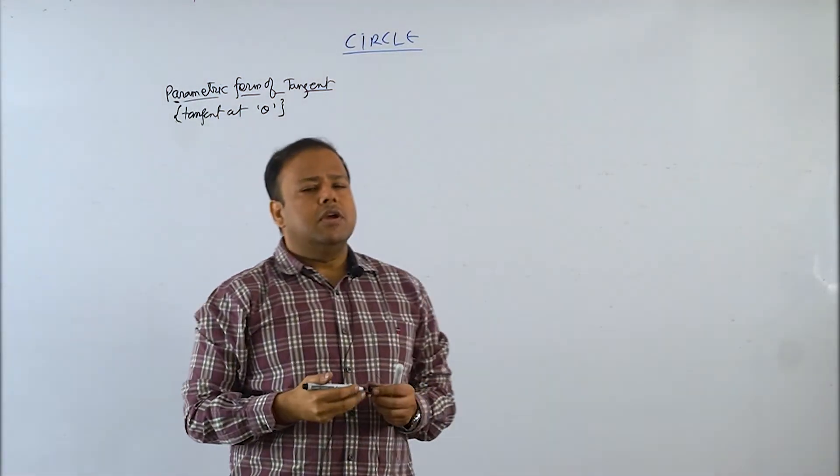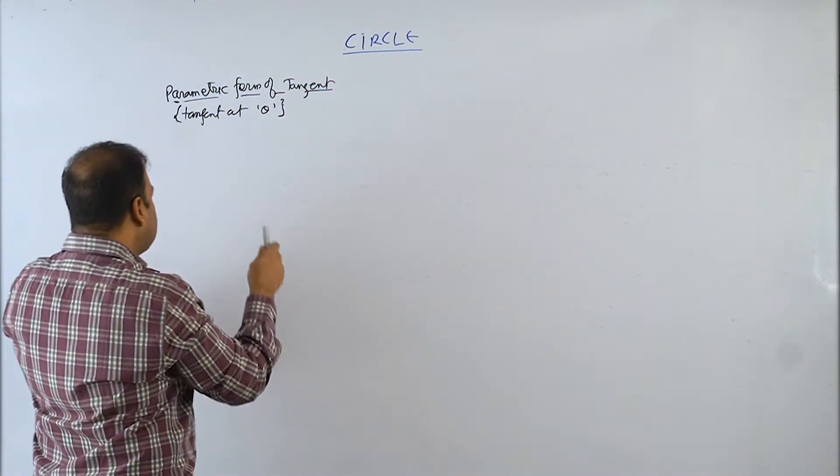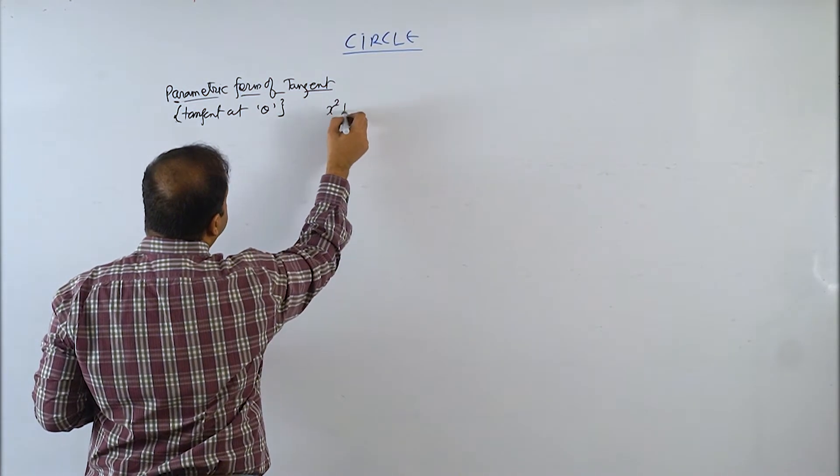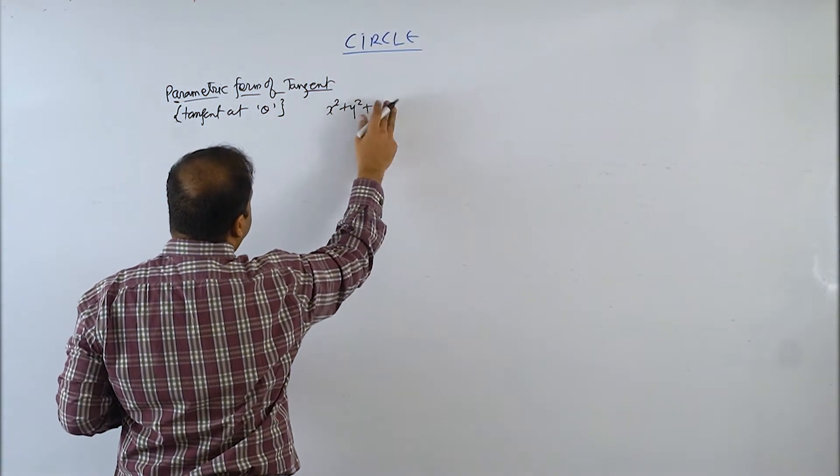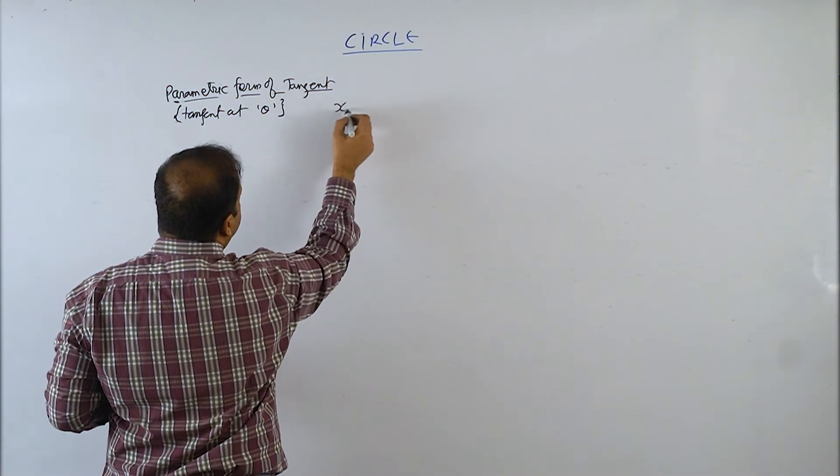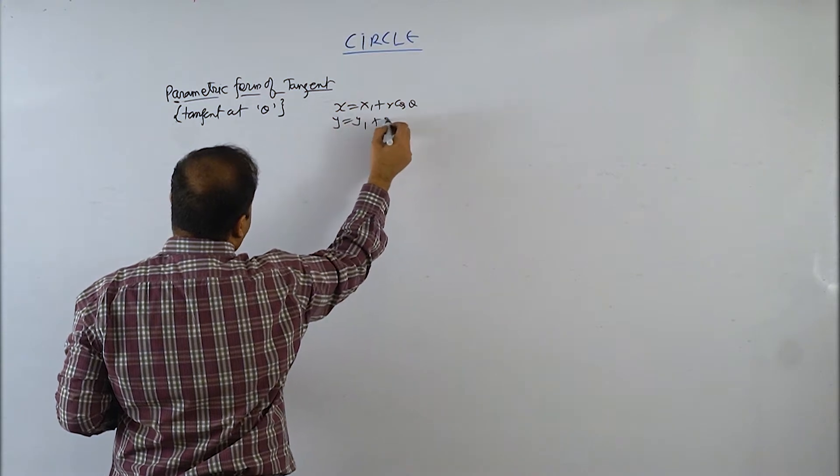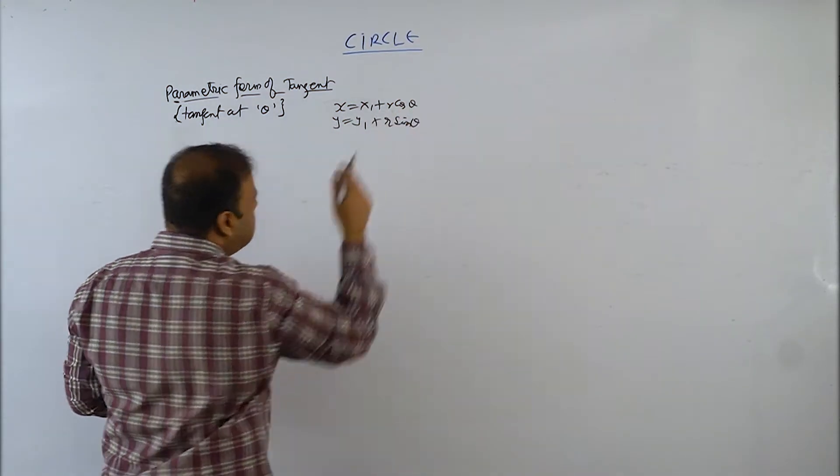Theta is what? Theta is x1 plus r cos theta, y1 plus r sin theta to x square plus y square. So x equals x1 plus r cos theta, y equals y1 plus r sin theta.